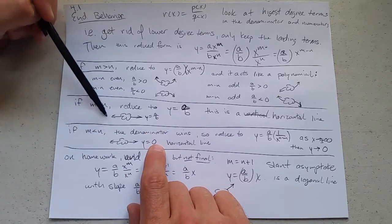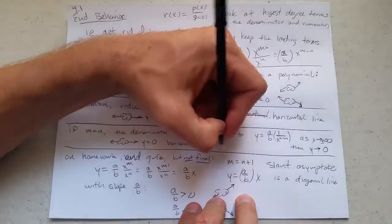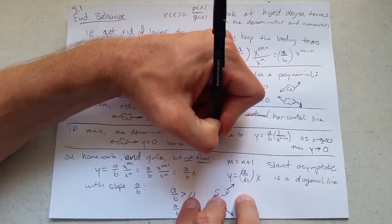These look really similar. They're both horizontal asymptotes. So I wrote horizontal line, but this is also known as a horizontal asymptote.